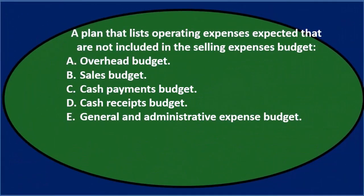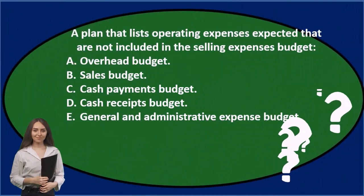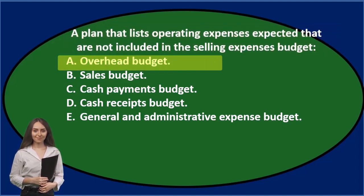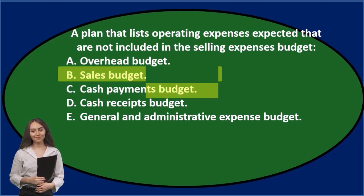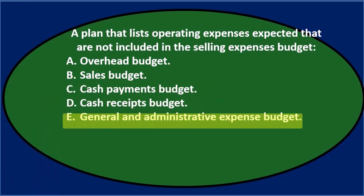First question. A plan that lists operating expenses expected that are not included in the selling expenses budget. A: Overhead budget. B: Sales budget. C: Cash payments budget. D: Cash receipts budget. And E: General and administrative budget.